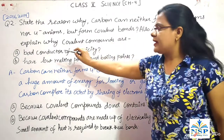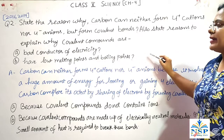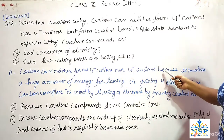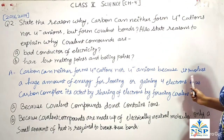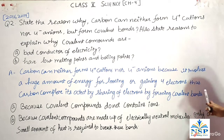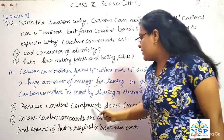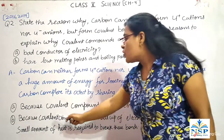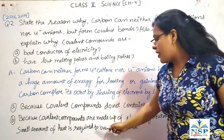Also state the reason to explain why covalent compounds are bad conductors of electricity or have low melting points and boiling points. Carbon can neither form 4+ cations nor 4− ions because it involves a huge amount of energy for losing or gaining 4 electrons. Thus, Carbon completes its octet by sharing of electrons by forming covalent bonds. Covalent compounds are bad conductors of electricity because they do not contain ions. Covalent compounds have low melting points and boiling points because they are made up of electrically neutral molecules, so only a small amount of heat is required to break these bonds.